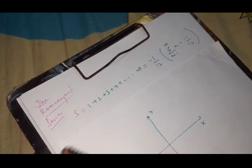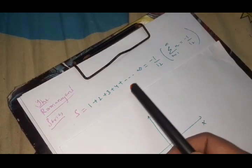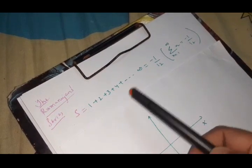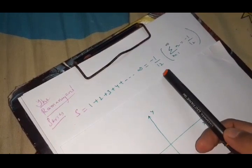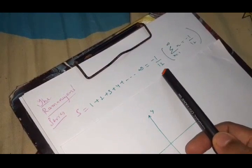The series that Ramanujan, the great mathematician of India got in his dream. The series deals with 1 plus 2 plus 3 plus 4 dot dot dot till infinity and the result is really amazing. That is minus 1 by 12. Very amazing because here we are adding the positives and we are getting a negative answer.